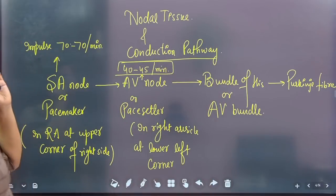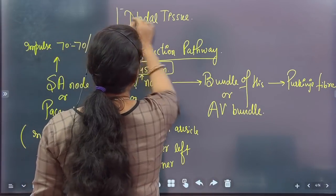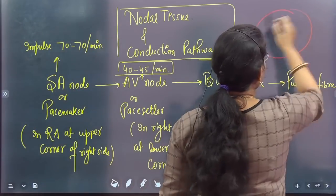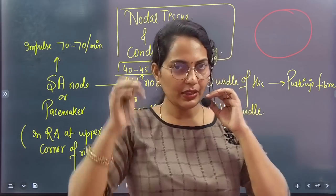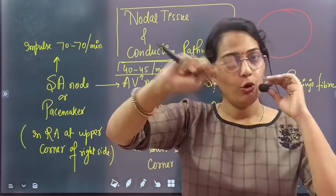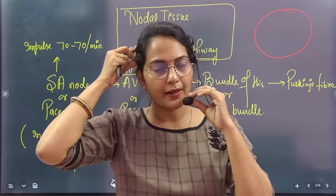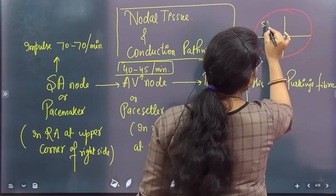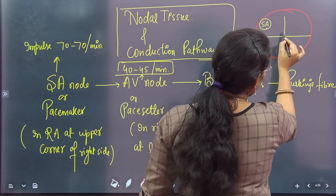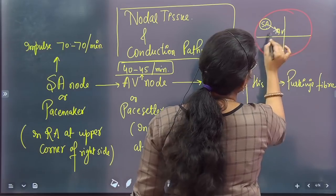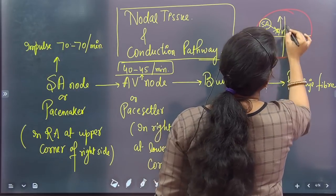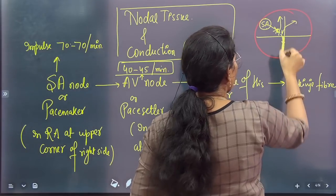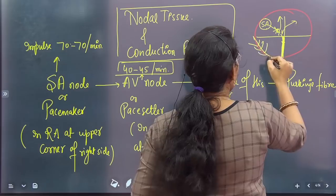Next we look at nodal tissue and the conduction pathway — where does conduction happen in the heart? Our heart is myogenic, meaning the origin of the heartbeat is within the heart itself — there is no nervous control. The heartbeat originates from the SA node found in the upper corner of the right auricle, and the AV node is found in the lower corner of the right auricle. The impulse travels from SA node to AV node, then to the AV bundle (Bundle of His), and then to the Purkinje fibers.